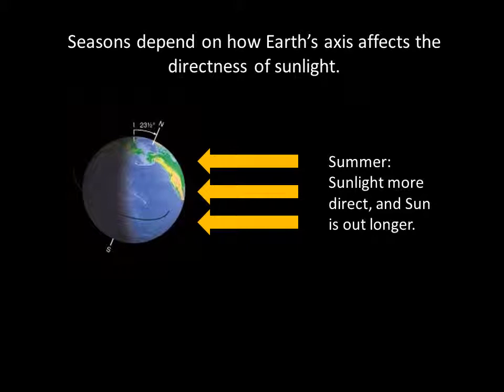When we in the northern hemisphere are tilted towards the sun, the light is more direct and the sun is out longer. It's summertime.